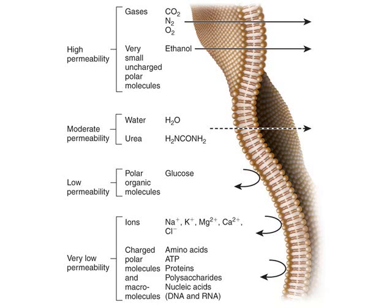This image shows different types of molecules and how easily they can move across the membrane. At the top, gases and very small uncharged molecules like oxygen, nitrogen gas, carbon dioxide, and ethanol diffuse very easily. Bigger molecules like water and urea can still diffuse across, but not as easily. Towards the bottom, glucose, ions, and large macromolecules — including proteins, nucleic acids, polysaccharides, and amino acids — cannot passively diffuse and need facilitated diffusion with a protein to get across.